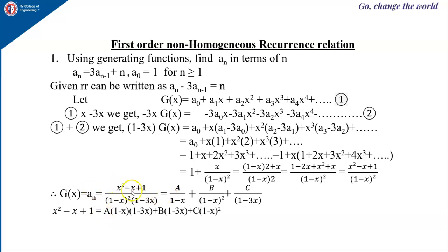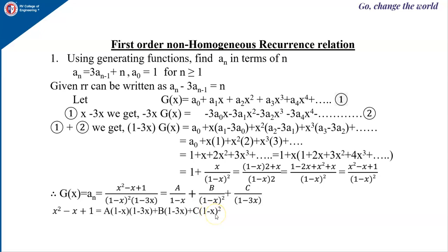Using partial fractions, we can write this as A/(1 − x) + B/(1 − x)² + C/(1 − 3x). Therefore, x² − x + 1 equals A·(1 − x)·(1 − 3x) + B·(1 − 3x) + C·(1 − x)², taking (1 − x)²·(1 − 3x) as the common denominator.